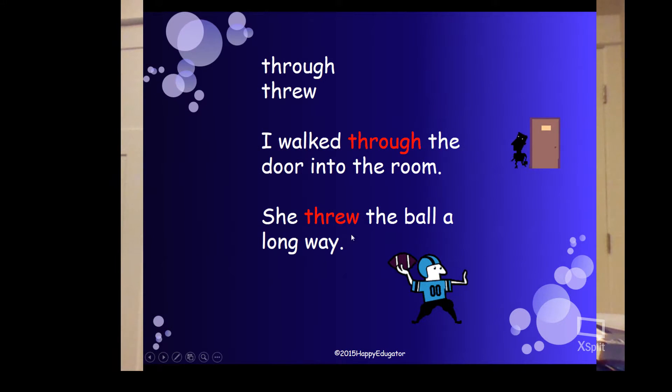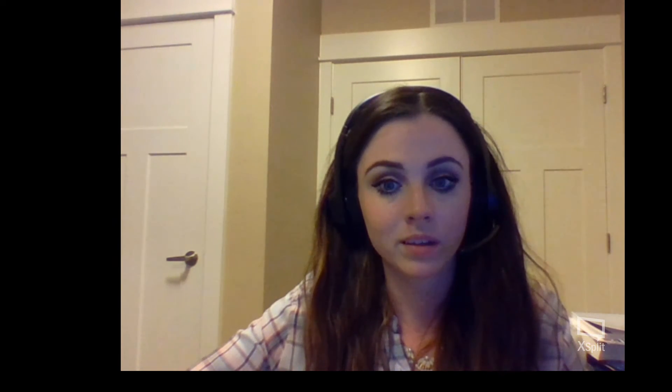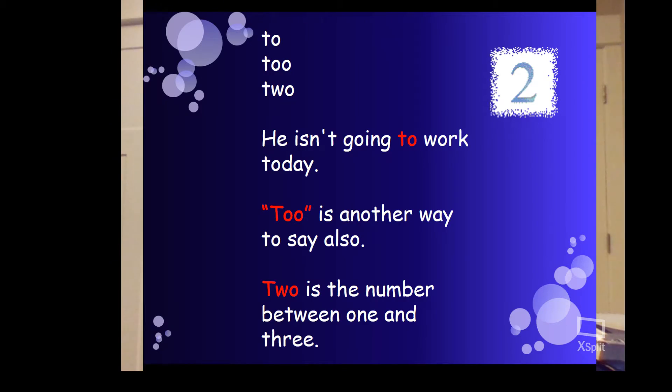Next, through versus threw. 'I walked through the door into the room' — like over, under, through. 'She threw the ball' — past tense of throw. Then to, too, and two — also very misused. 'He isn't going to work today,' T-O. Too, T-O-O, is another way to say 'also' — if you can interchange your word with 'also,' it should be T-O-O. 'I want to go there too,' or 'I want to go there also.' And two is the number between one and three — we should all know that.